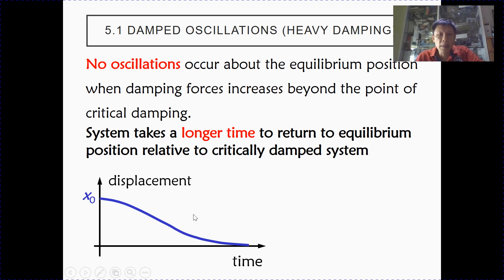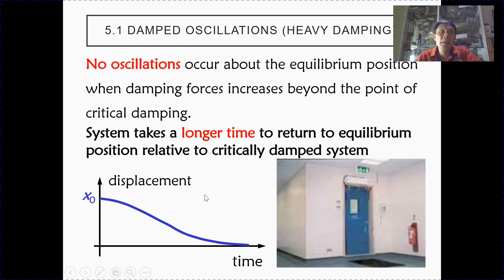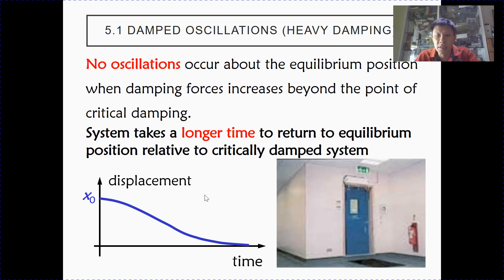For critical damping, it is a minimum time. For heavy damping, it takes a longer time. A very common application of heavy damping is the door anti-slamming mechanism for heavy doors, for example those found in a lecture theatre.